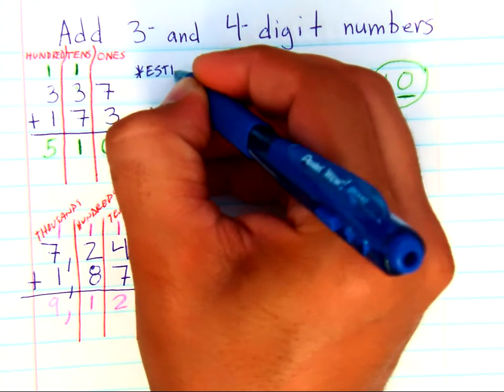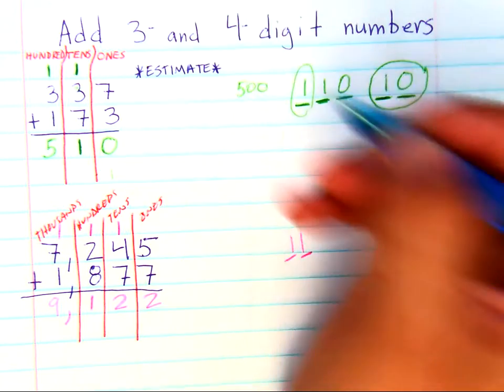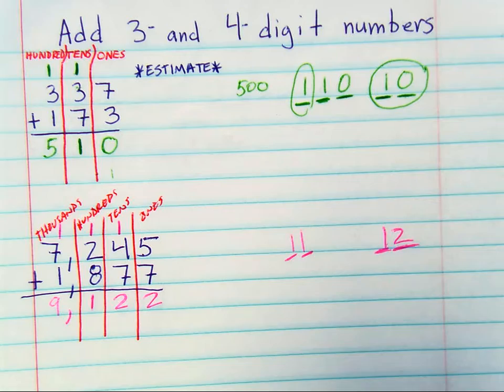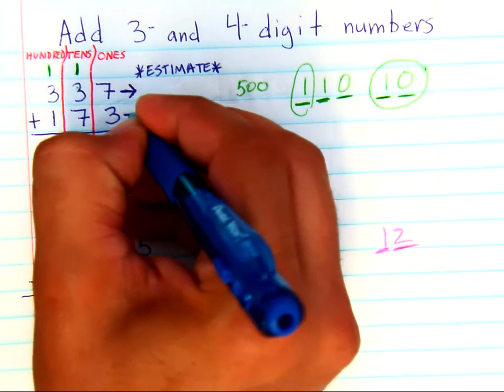They wanted to make sure we don't forget how to estimate. And when you do an estimate, you have to first round each number.